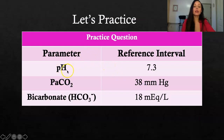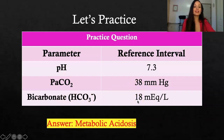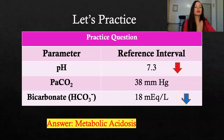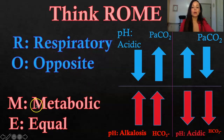Now let's practice. Step one: look at the pH — is it high or low? The CO2 is 38, and the bicarb is 18. The answer is metabolic acidosis. The pH is low, the CO2 is within normal range so it's not respiratory, and the bicarb is low. The arrows are all facing down — equal direction. Respiratory opposite, metabolic equal. ROME — metabolic acidosis.